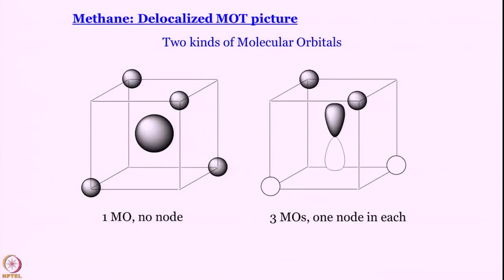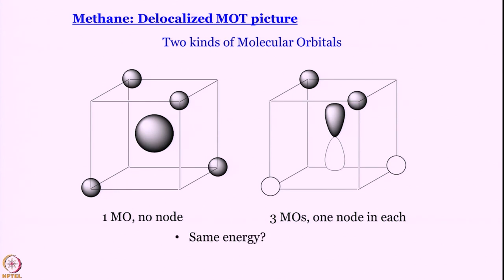Now we have two kinds of MOs: one involving the 2s orbital — only one possible MO — and three MOs involving the 2px, 2py, and 2pz atomic orbitals of carbon. Point number 2: there is no node in the first MO, but there is a node in the second set of MOs — the node that is already present in the p orbital itself. Should they have the same energy? From our elementary knowledge of chemistry, we expect different energies because the first MO has no node and the second has one node, and energy generally increases with the number of nodes.